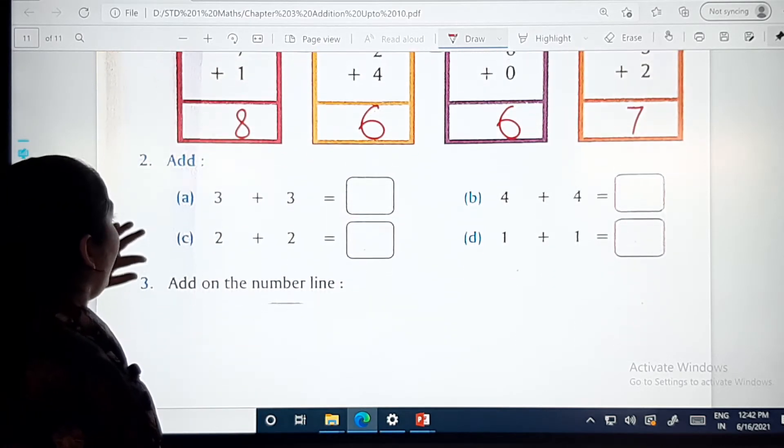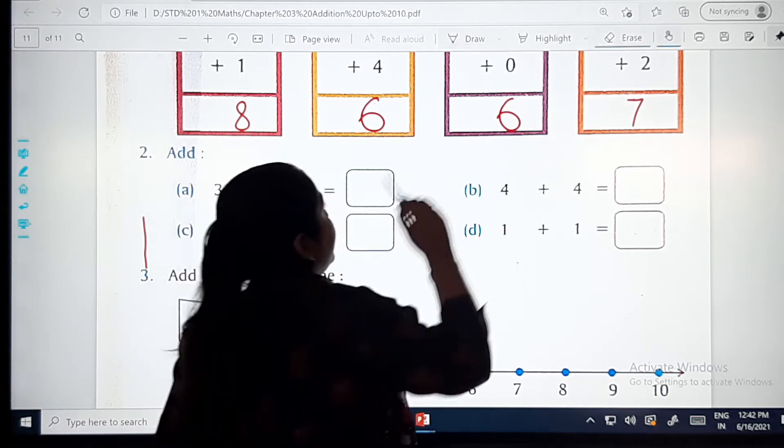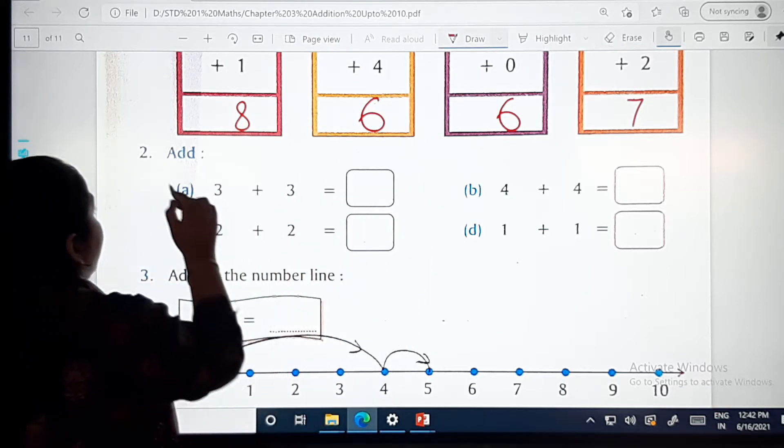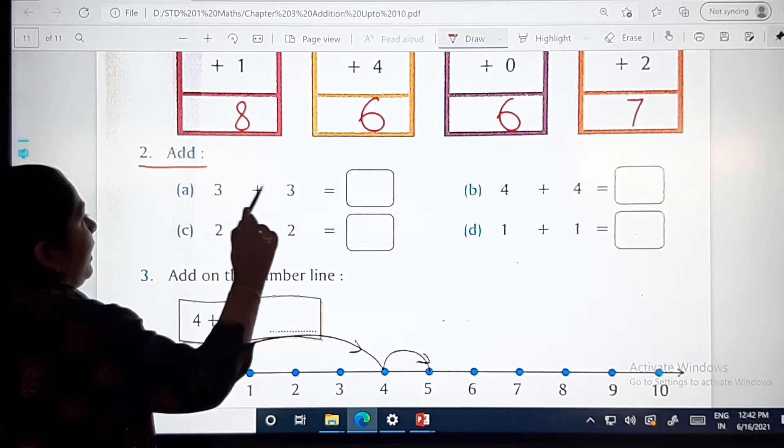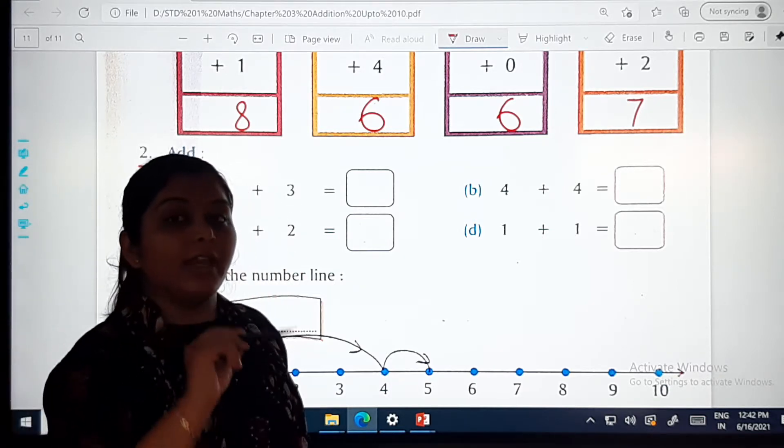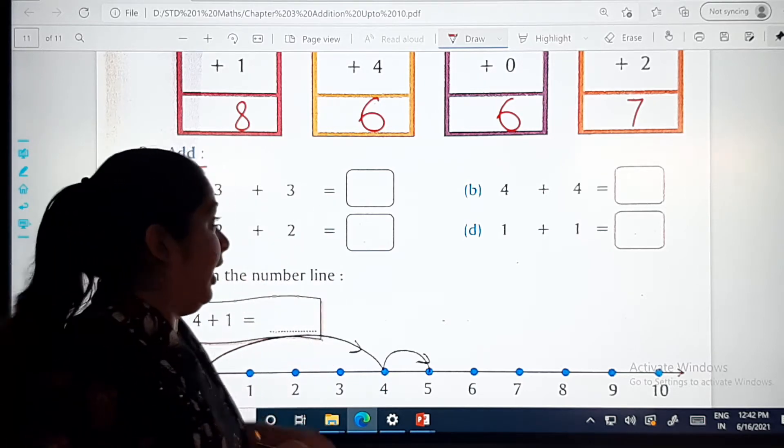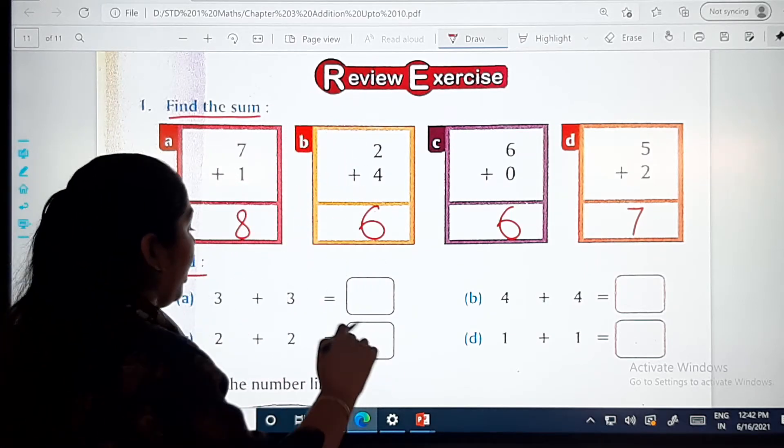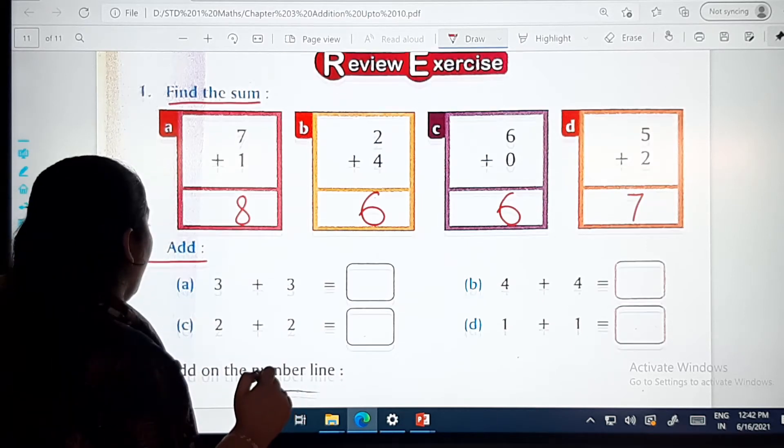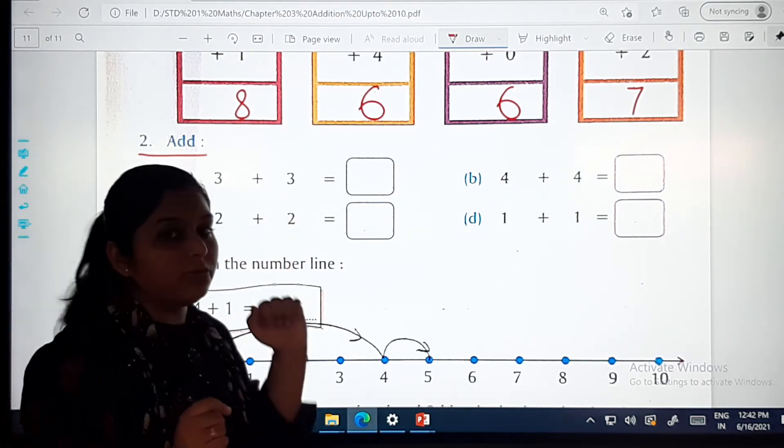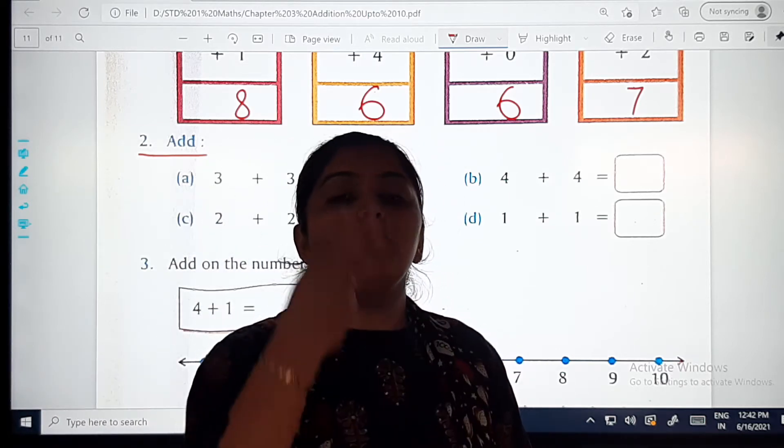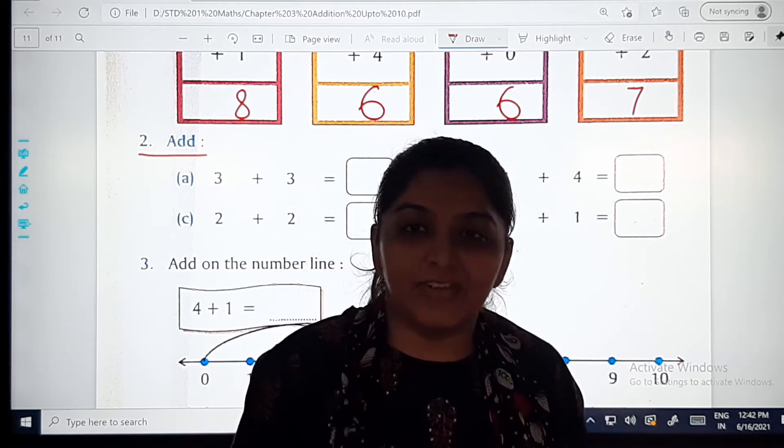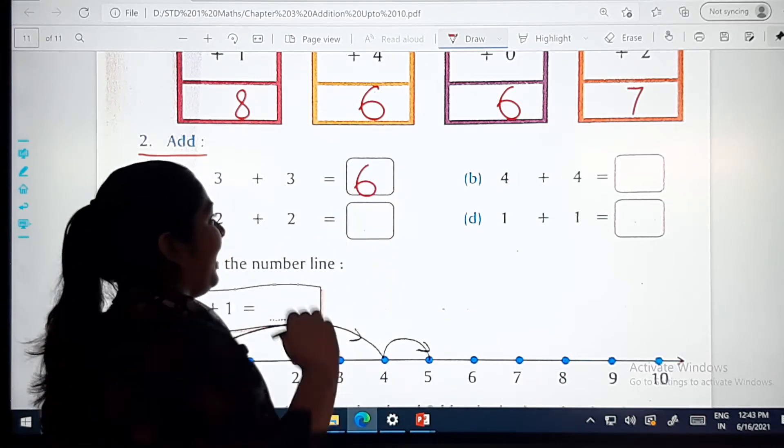Next, question number two. What is the question number two, dear children? Again, you have to add it. That is add. The first one: three plus three. Horizontal way mein hum ko addition karna hai. Pehle hum ne vertically mein addition kiya tha. Vertically means aise, and horizontally means aise. Now, next one is three plus three. Take three as a base and you have to add three more, four. So four, five and six. So six will be your answer, dear children. Like this.